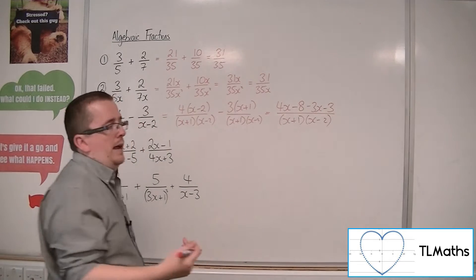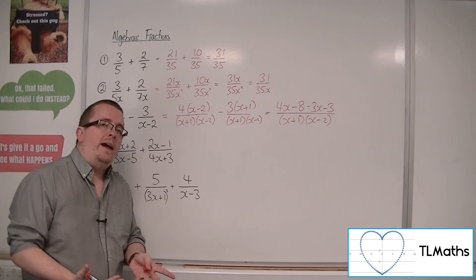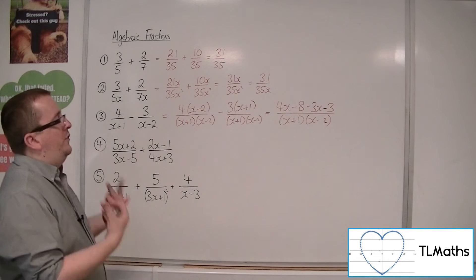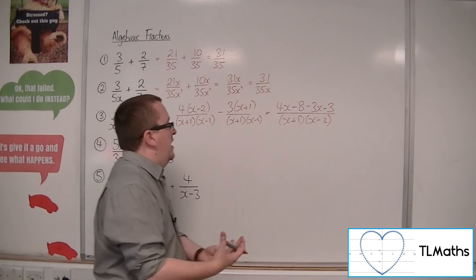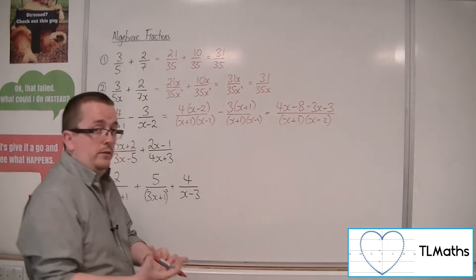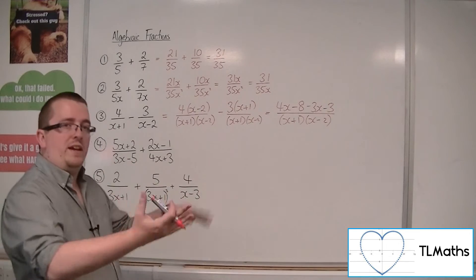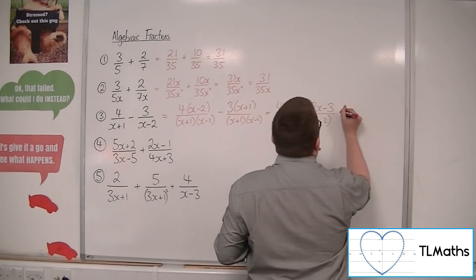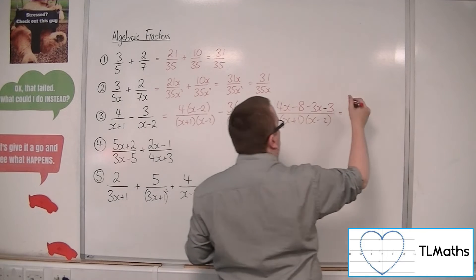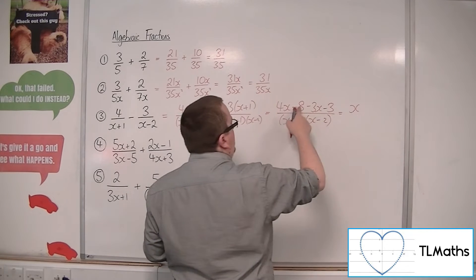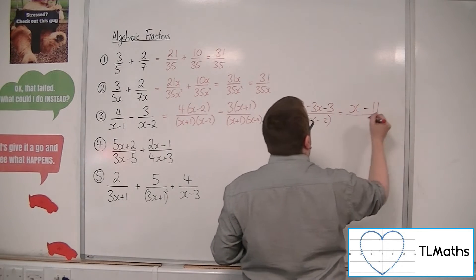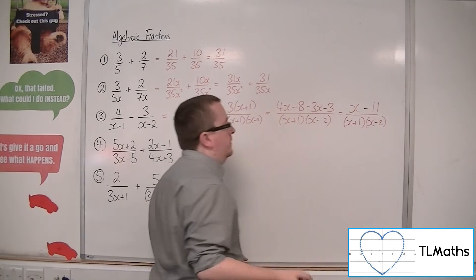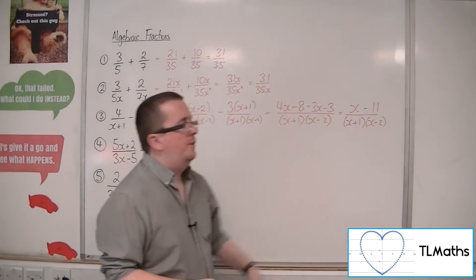Why would I expand the denominator if it's already neatly factorised? Unless I absolutely had to, it makes more sense to keep it neat. Don't unnecessarily expand brackets everywhere just because you can. The numerator can be simplified: 4x take away 3x is just x, minus 8 take away 3 is minus 11. So we've got x minus 11 over (x plus 1)(x minus 2). That's nice and neat, and that's the finished answer.